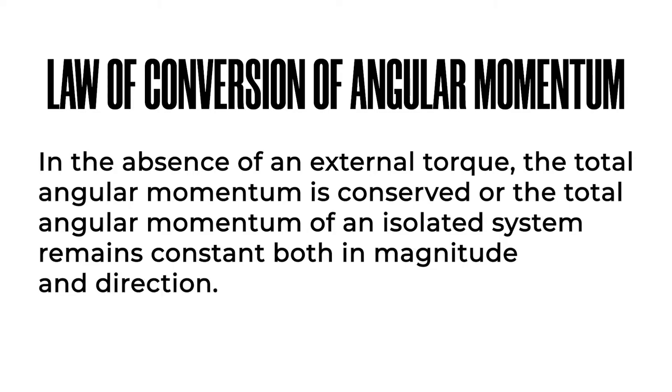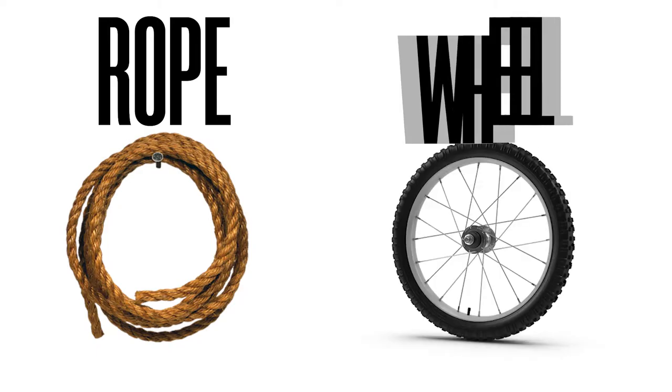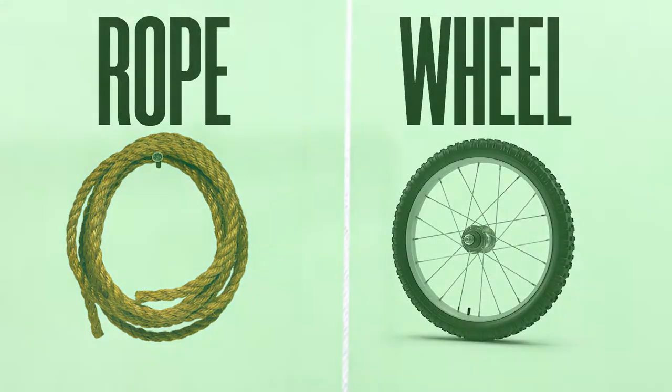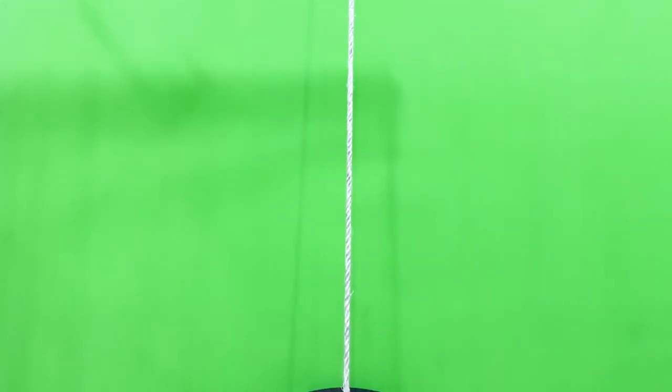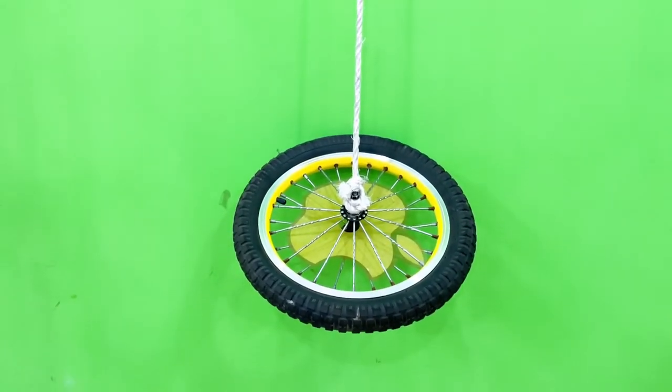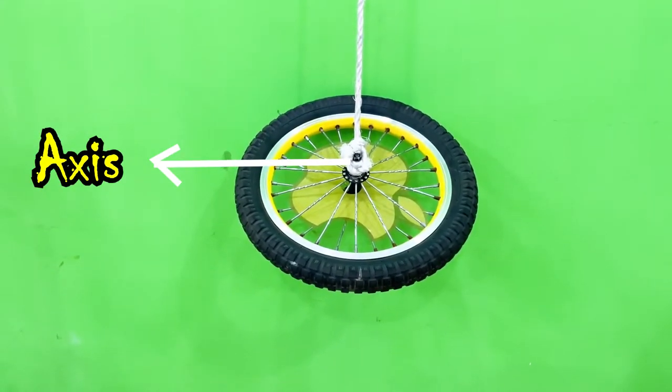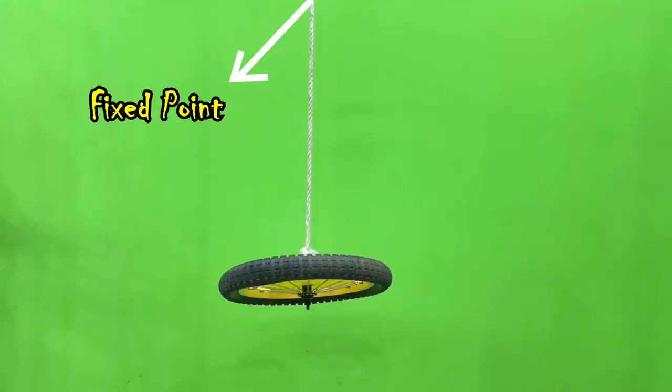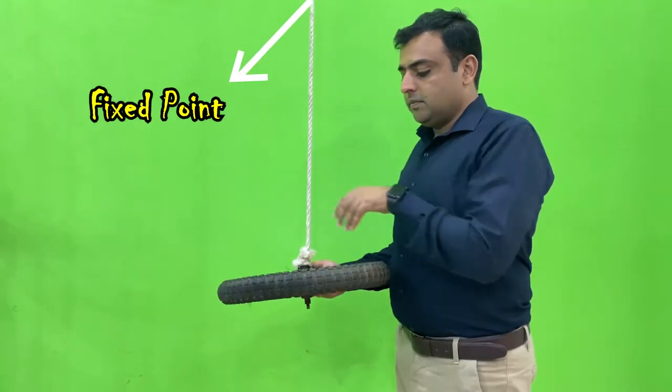For this experiment we will need a rope and a wheel. Through this experiment we will study how the tire moves in clockwise direction. First, we will tie the rope with the axis of the wheel, then tie the rope with some fixed point, and the tire will be placed fixed in the air.